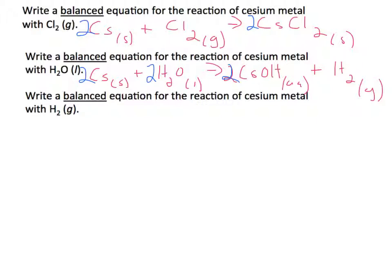Alright, and then the last one is write a balanced equation for the reaction of cesium metal with hydrogen gas. So here we have cesium metal, plus we have hydrogen gas.